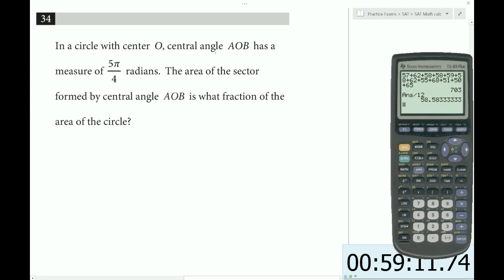In a circle with center O, central angle AOB has a measure of 5 pi over 4 radians. If the area of the sector formed by central angle AOB is what fraction of the circle? We have the central angle measuring 5 pi over 4 radians. They gave that to us in radians, which indicates we should use s equals r theta, the arc length formula.